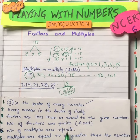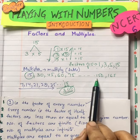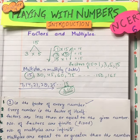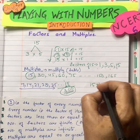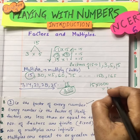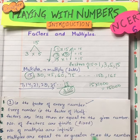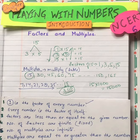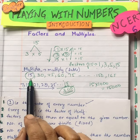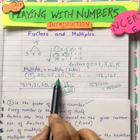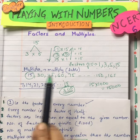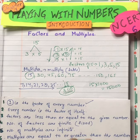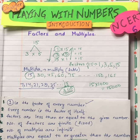On the other hand, the number of multiples are infinite. Multiples are equal to or greater than the number. I hope factors and multiples are clear. When you ask questions, we will continue with them. So let's come to the first exercise.